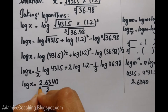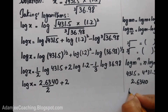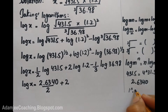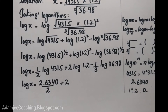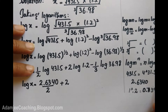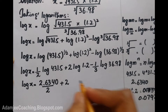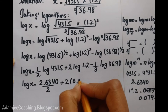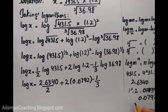For log 1.2: the reference point and decimal point have no difference, so the characteristic is 0. We check in the table at 12, and the value is 0.0792. Since the power is 2, we multiply: 2 times 0.0792 equals 0.1584.